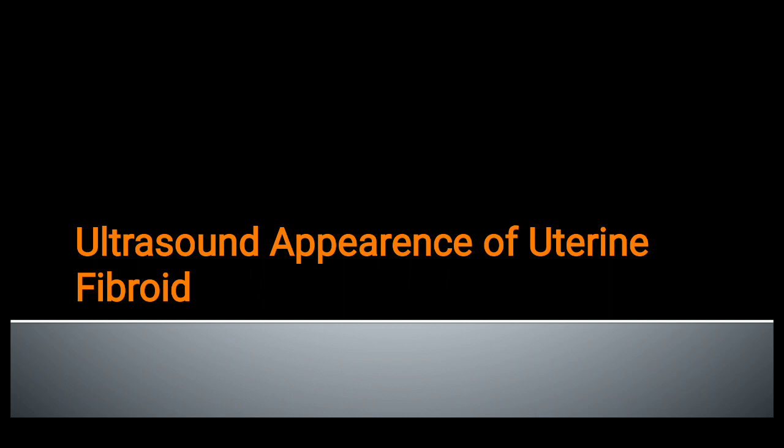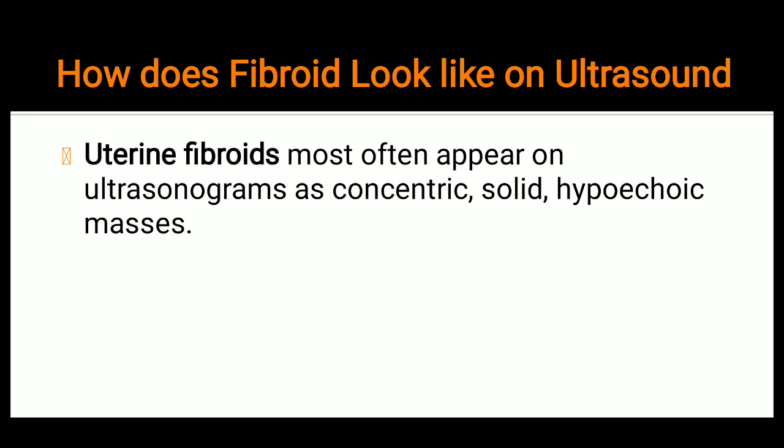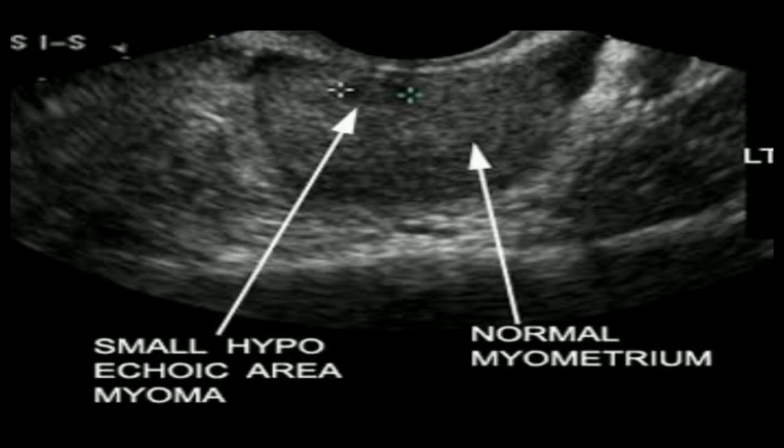There is a specific appearance which we should keep in mind while doing ultrasound of a patient with symptoms suggestive of uterine fibroid. Uterine fibroids most often appear on ultrasonogram as concentric solid and hypoechoic masses — hypoechoic meaning slightly darker in color as compared to the surrounding structure.